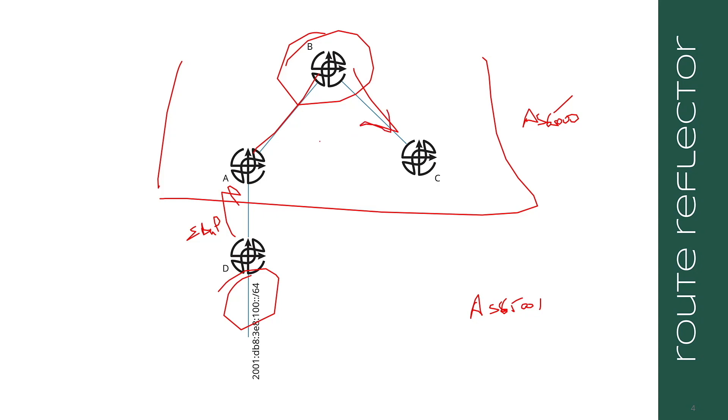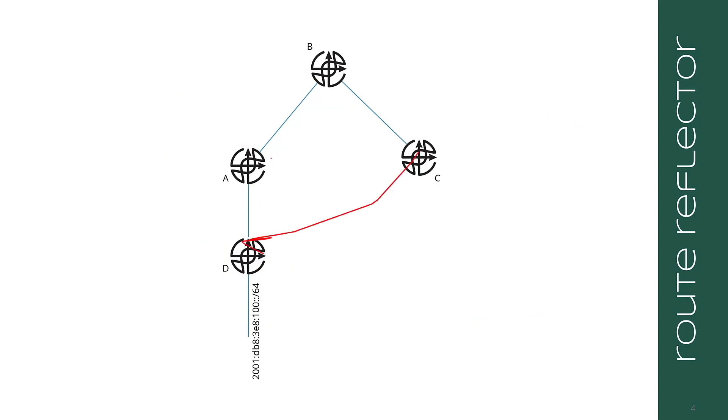What is the next hop in this situation? C will retain the next hop of D because this is IBGP. This means that C needs to have reachability to D, even though D is outside of its autonomous system.